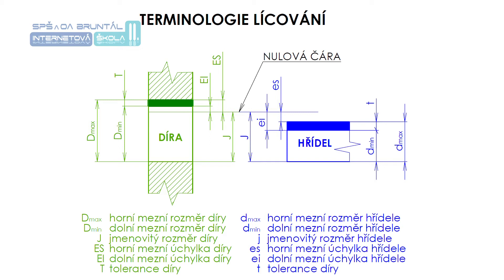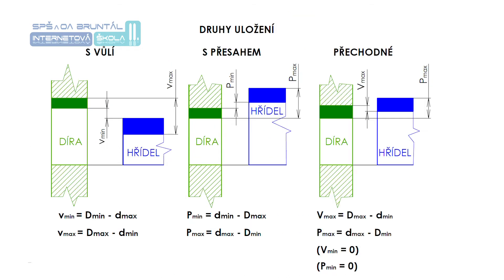Mezní úchylky mohou být kladné nebo záporné podle polohy vůči nulové čáře. Tolerance je však vždy kladné číslo. Předepisování mezních rozměrů – to je vytvoření předpokladu správného vztahu mezi dvěma součástmi, které jsou v sobě uloženy nebo na sebe dosedají – se označuje obecným pojmem lícování.